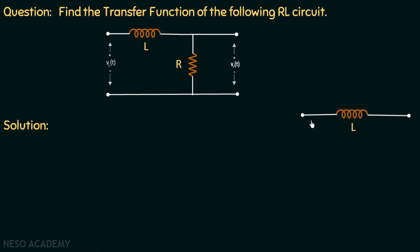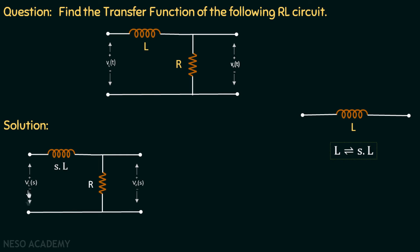Now we know that the Laplace transform for an inductor is SL. Let us convert this circuit to its Laplace equivalent circuit. The input is V(s), the impedance of the inductor is SL, the impedance of the resistor is R, and the output voltage measured across the resistor is Vout(s).